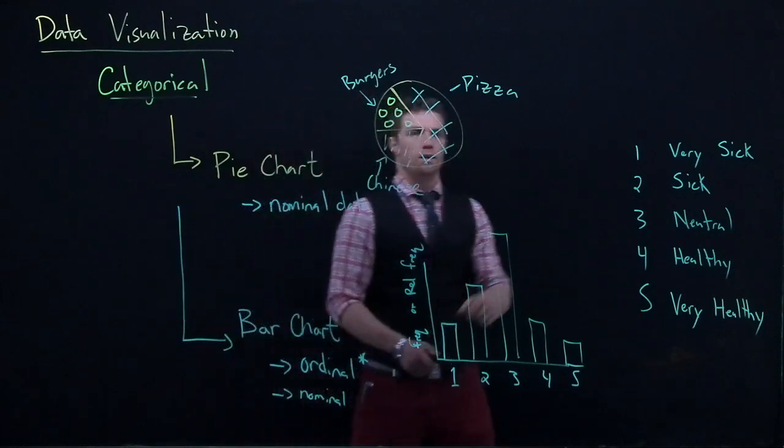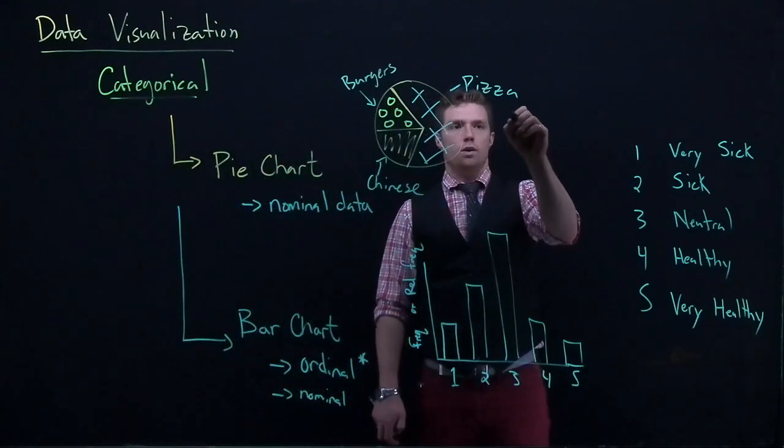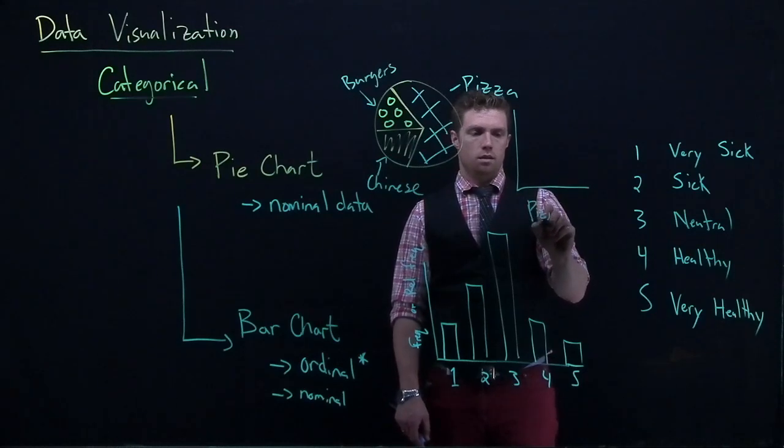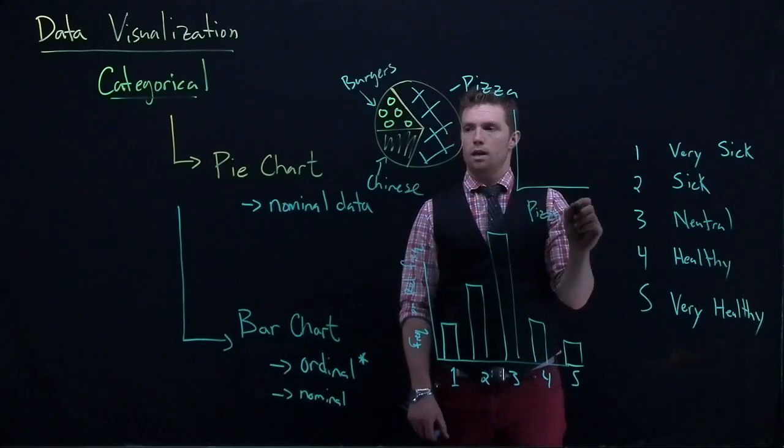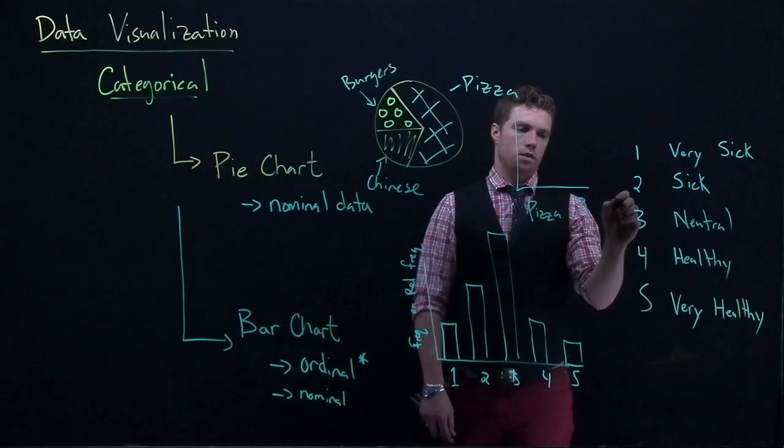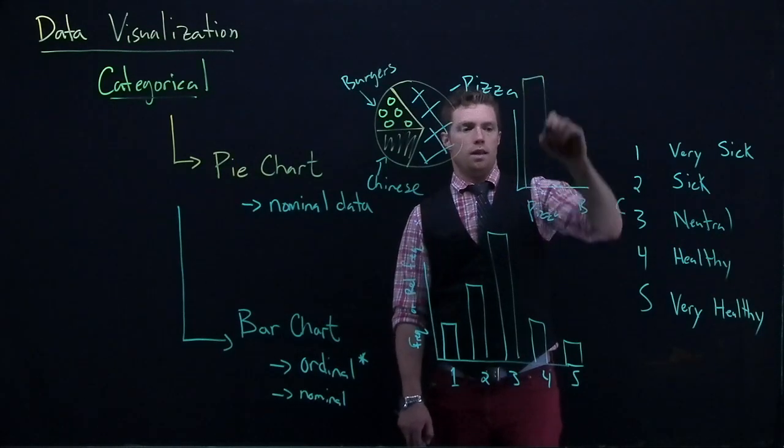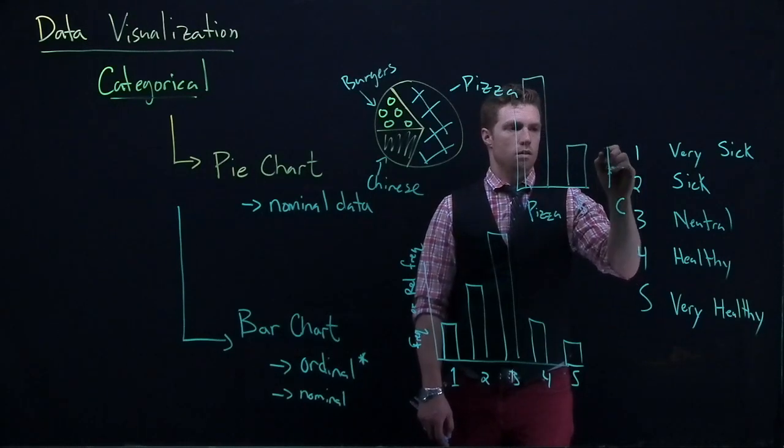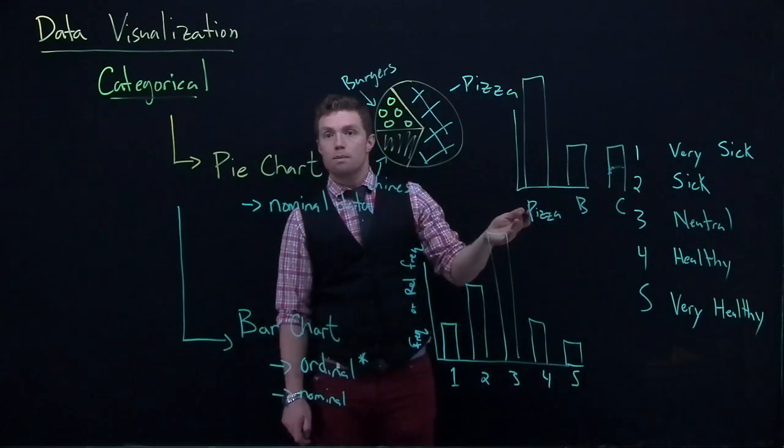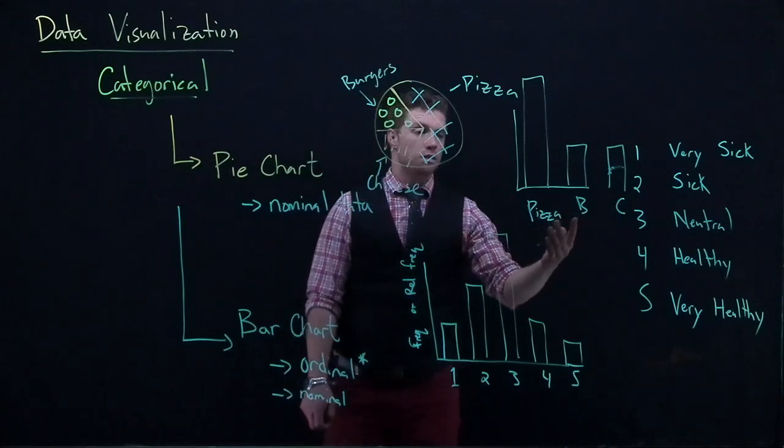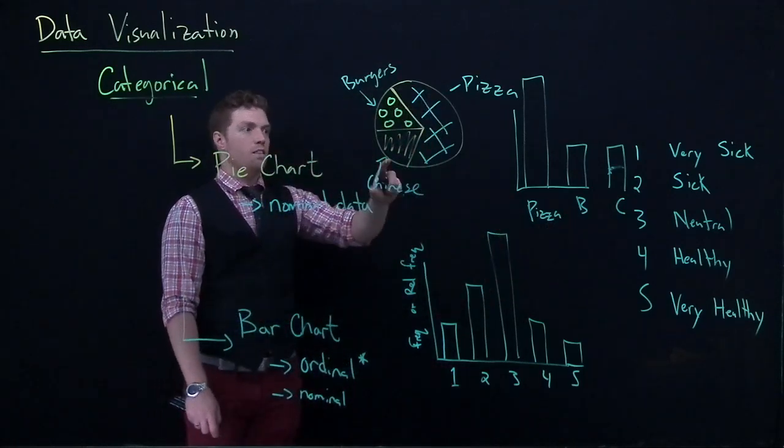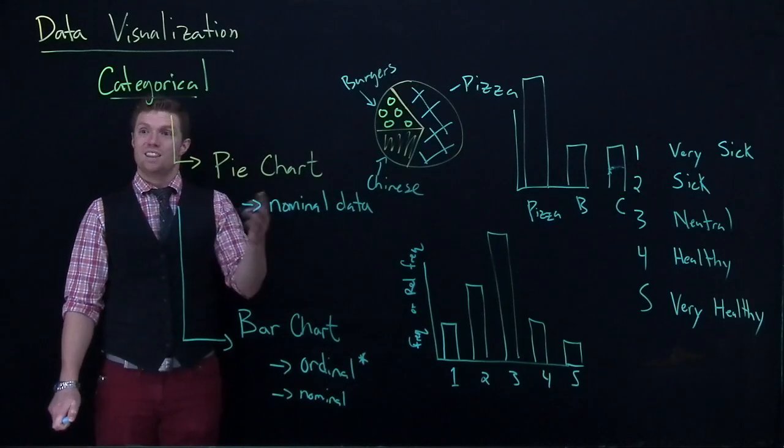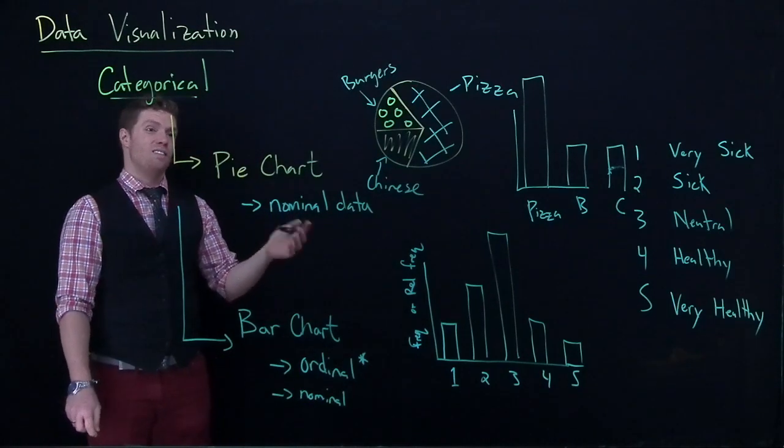So let's actually do a bar chart of this guy real quick. So I'll do pizza, burgers, and Chinese. And it would be something like this. Now is there anything unique about this shape? No, I could switch pizza and burgers in order. And the graphic would have a different shape. But the shape really doesn't mean anything.